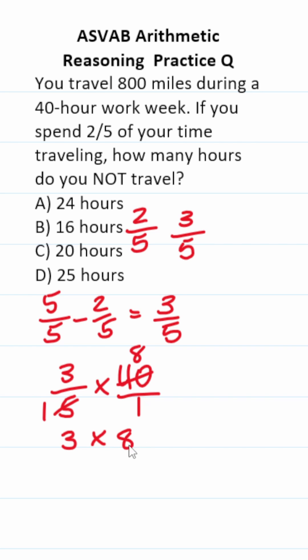8 divided by 1 is 8. 3 times 8 is 24. So the correct answer to this one is A, you spend 24 hours of your 40-hour work week, which is three-fifths of your work week, not traveling.